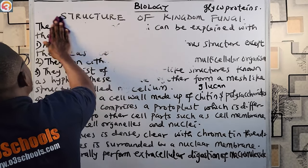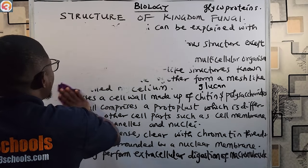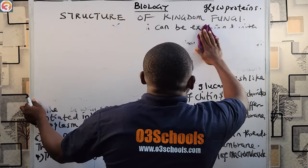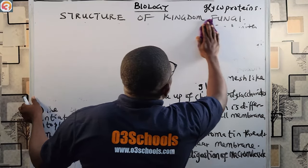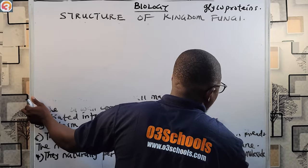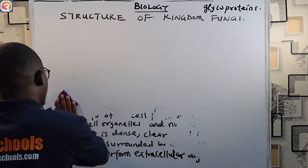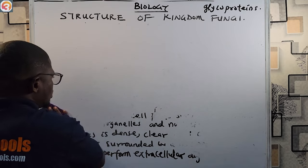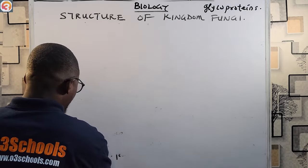Now let's look at the structure of Rhizopus per sheet, and then we'll look at the mushroom. We'll learn one or two things about them before moving on to the next part of the discussion.